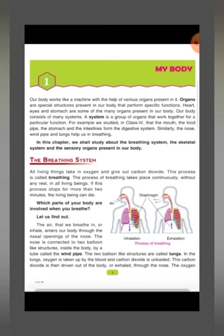Our body works like a machine with the help of various organs present in it. Organs are special structures present in our body that perform specific functions — such as the heart, eyes, and stomach, which are some of the many organs present in our body.